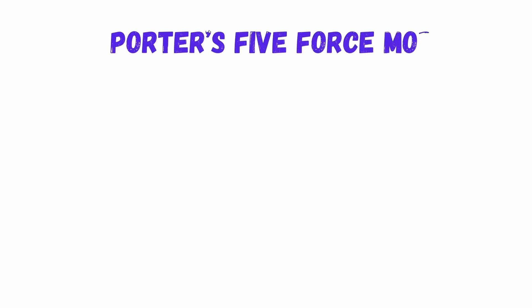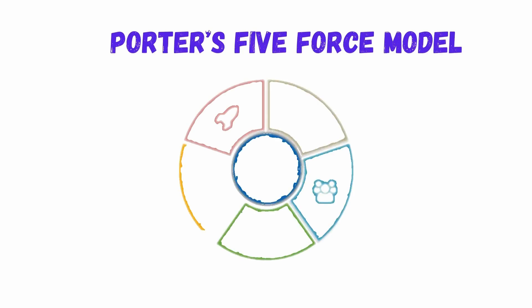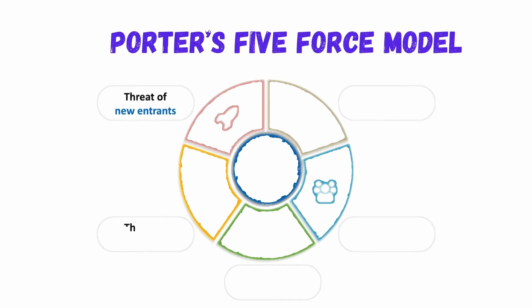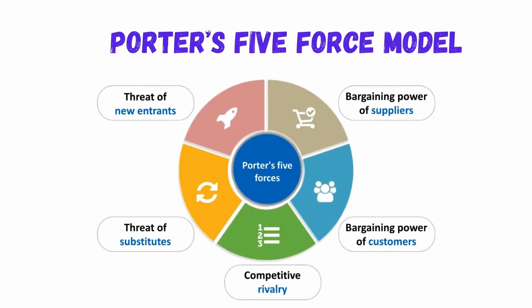For example, if we take Porter's Five Forces model, developed in 1980, through which we can understand how industry attractiveness works — the five elements that already exist are competitive rivalry, bargaining power of suppliers, bargaining power of buyers, threat of new entrants, and threat of substitute products or services.